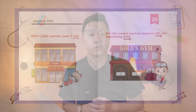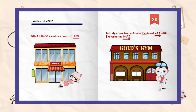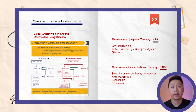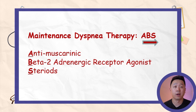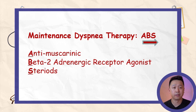For the COPD acronym, we start with the maintenance therapy for dyspnea, which spells out ABS: A for anti-muscarinic, B for Beta-2 adrenergic receptor agonist (long-acting Beta-2 adrenergic agonist), and S for steroid.